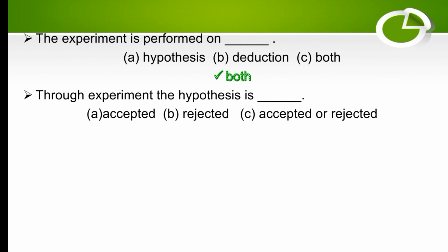Through experiment, the hypothesis is what? The options are accepted, rejected, or accepted or rejected both. Through experiment, the hypothesis is either accepted or rejected, so the right option is C.